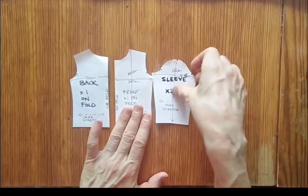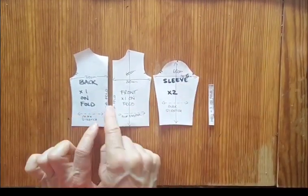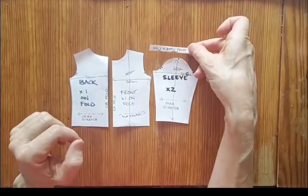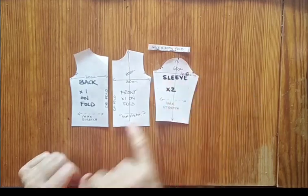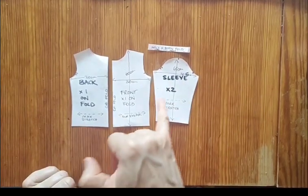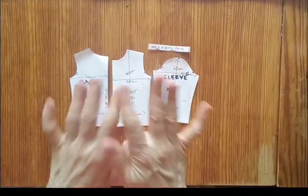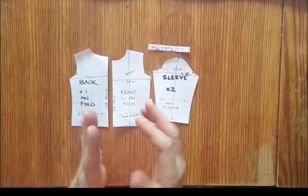So this is an example of Sheila's top, it's a jersey top, so it'll be cut on the fold front and back, it's got a sleeve and it's got a little neckband which is also cut on the fold. Each of them I've written on the max stretch, I'm not really interested in the straight grain of the fabric, I'm interested in where it stretches the most around the body.